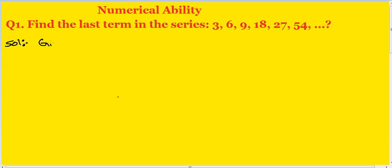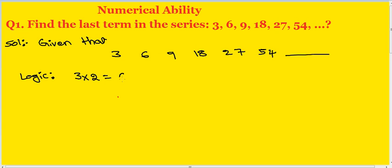Solution, given that series 3, 6, 9, 18, 27, 54, dash. Logic is, 3 into 2 equals 6. First one is 3, so 3.